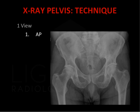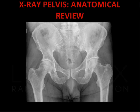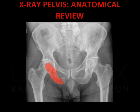The standard projection is an AP radiograph. The bony pelvis consists of the sacrum and coccyx. This articulates with the iliac bone via the sacroiliac joints. The pubic bones articulate with each other at the pubic symphysis. The ischial bones fuse with the iliac and pubic bones to form the acetabulum.